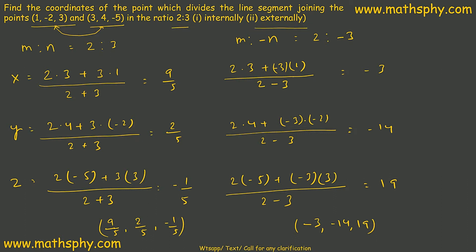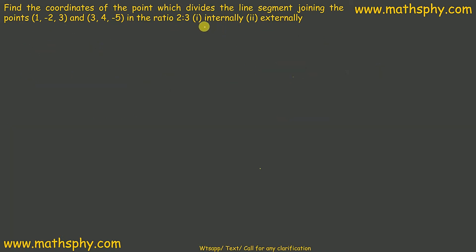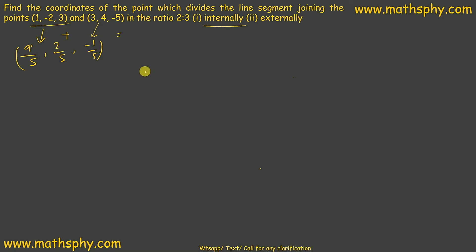Now let's do a quick calculation and verify whether these points actually fall inside or outside the line joining the two given points. When a point intersects internally, the coordinates satisfy: distance from A to the internal point plus distance from the internal point to B should equal the distance from A to B. Let's call this internal point C, with A and B as the endpoints.